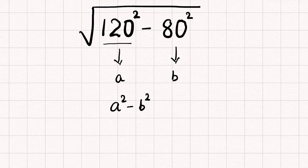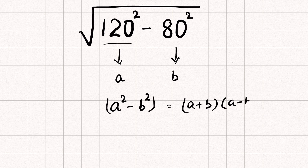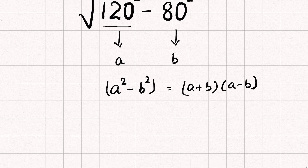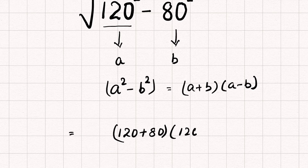This is an algebraic expression we can write as (a + b)(a - b). So √(120² - 80²) becomes √((120 + 80)(120 - 80)).